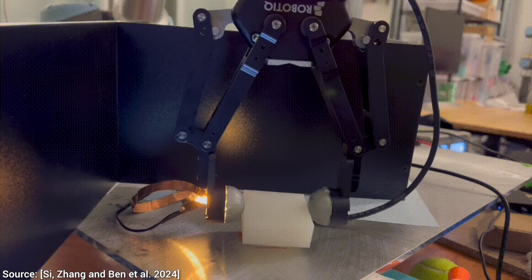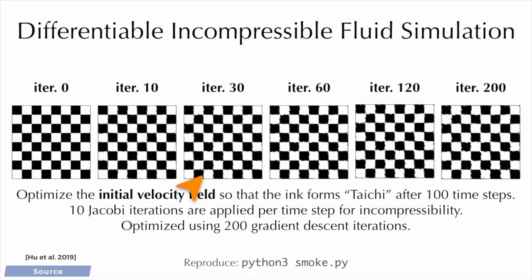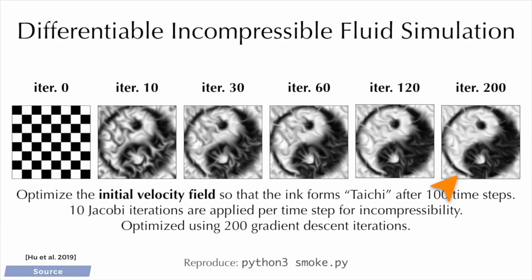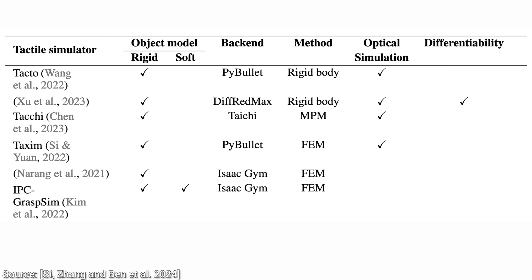So, can it finally do the grasping problem? We will see in just a moment. Now, there are many previous systems that can do parts of what this is doing. Rigid bodies, soft bodies, differentiability, optical simulations, they can do parts of it. But, this new system seems to be the only one that has it all.